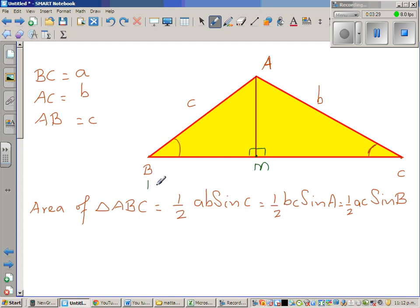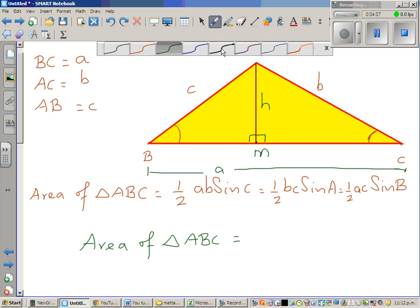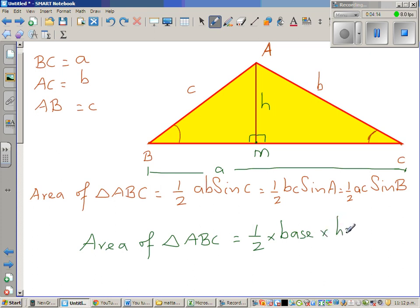So we say that this length is a. And let us call this h for height. So let us start with the area of the triangle, the well-known formula, half base times height. So area of triangle ABC is half base times height, which is half times base times height is the formula.